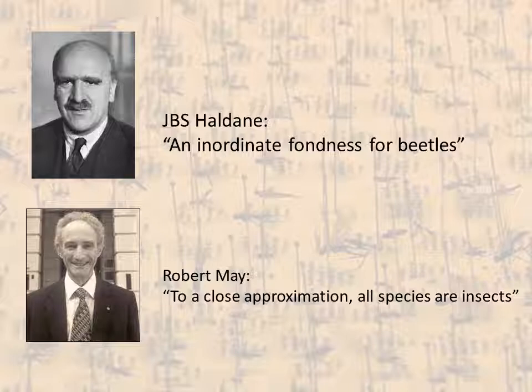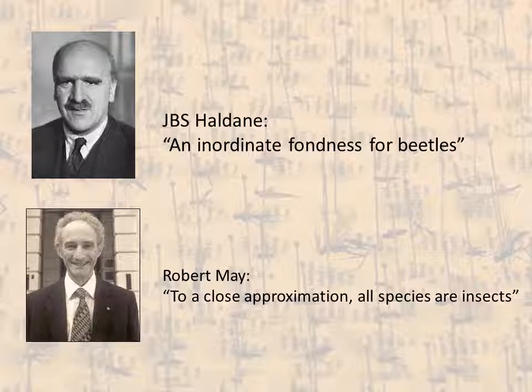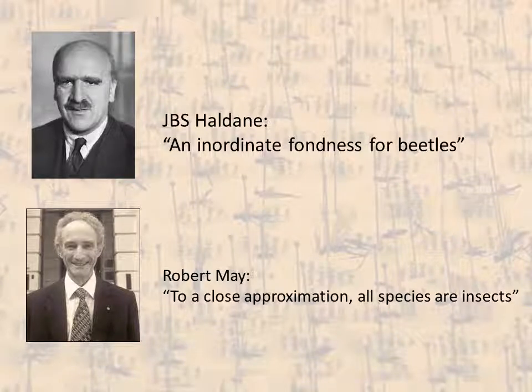Indeed, such a creator would also have to be very fond of astronomy. Robert May, British government chief scientist and president of the Royal Society, famously said that to a close approximation, all species are insects. Ecologists and evolutionary biologists like to deal with round numbers — if approximately 55% to 60% of described species are insects, you can just round up to 100% and you're about right.